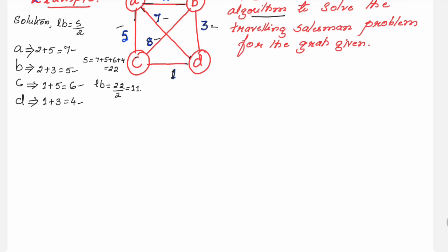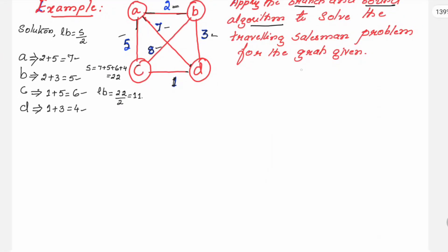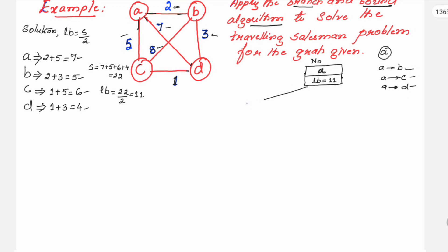Now you start building the state space tree by writing the root node N0 with vertex A and LB = 11. At the second level, you consider what happens if the traveling salesperson goes from A to B (node N1), A to C (node N2), or A to D (node N3). For all three nodes, you need to find the lower bound.